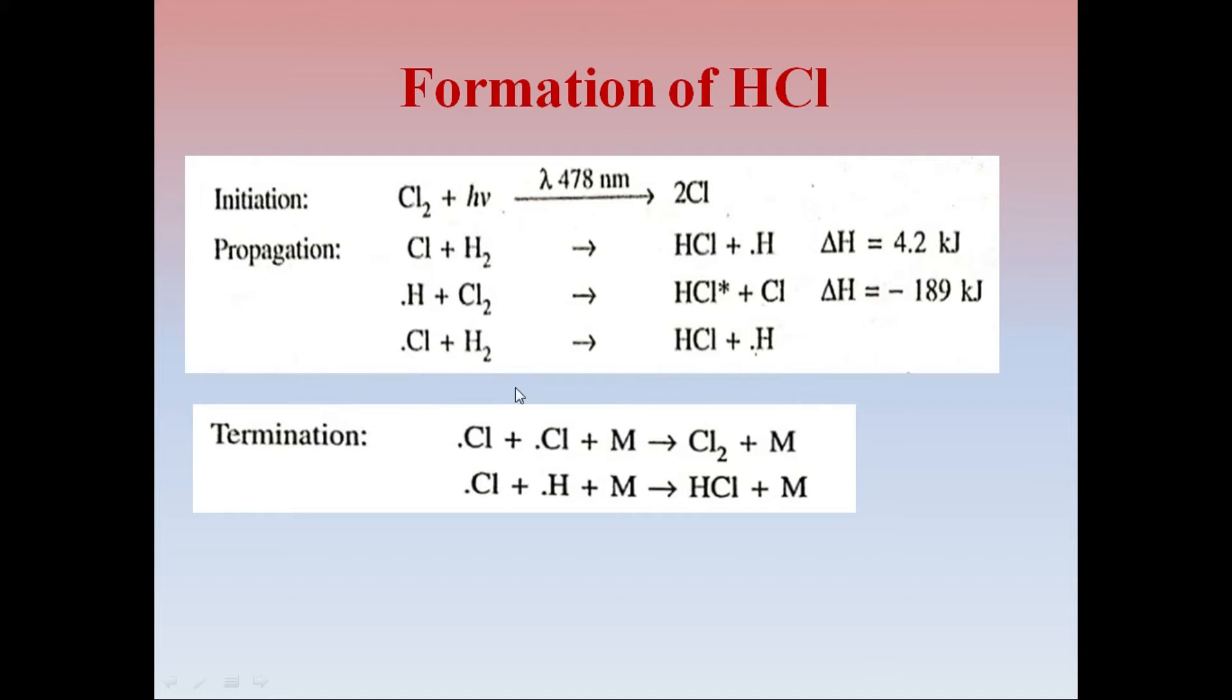Finally, the termination reaction involves two chlorine free radicals combined with M. M means some material called quenching material. It may be a surface of the beaker or some other foreign particle which suppresses or stops these chain reactions. That process is called quenching.